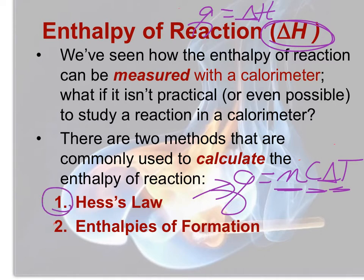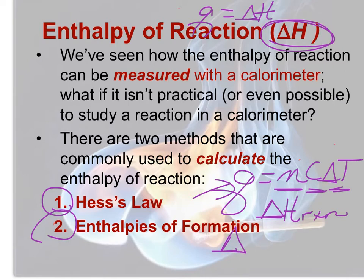There are two common methods for calculating delta H: one is called Hess's Law and the other is using enthalpies of formation. There is more than one type of enthalpy — so far we've talked about the enthalpy change in a chemical reaction, and another term coming up is the enthalpy of formation. Pay attention to the subscript next to the delta H value, as it will tell you what enthalpy the problem is referring to.